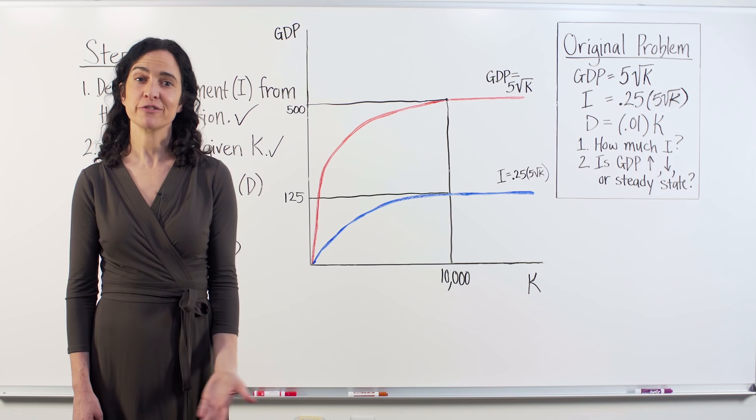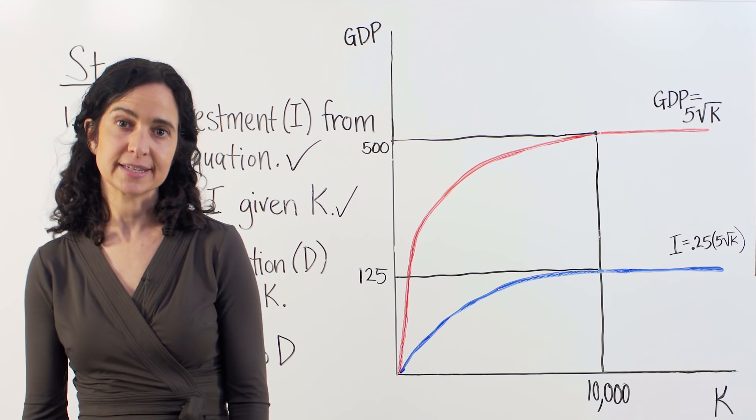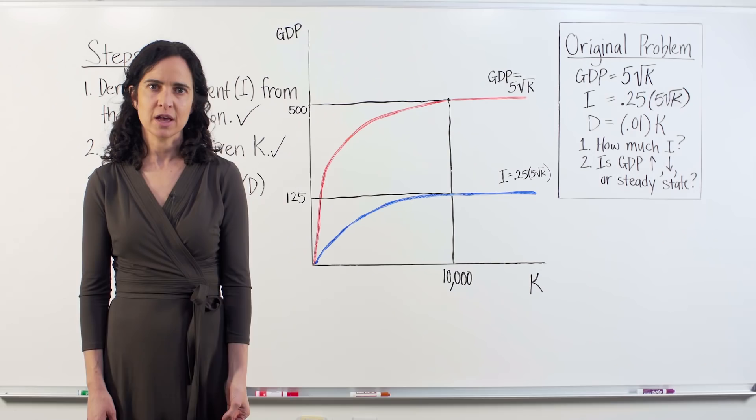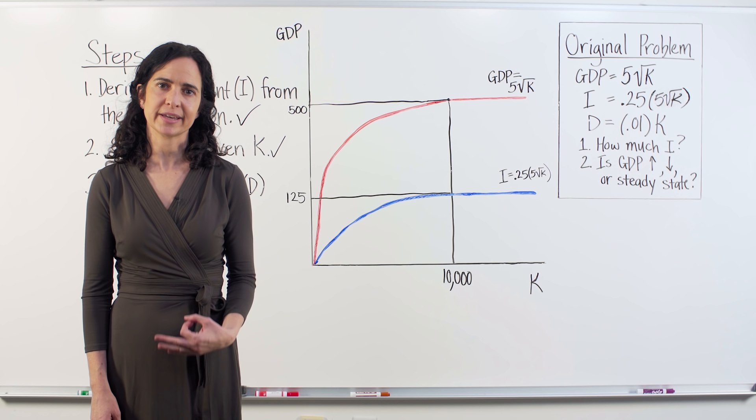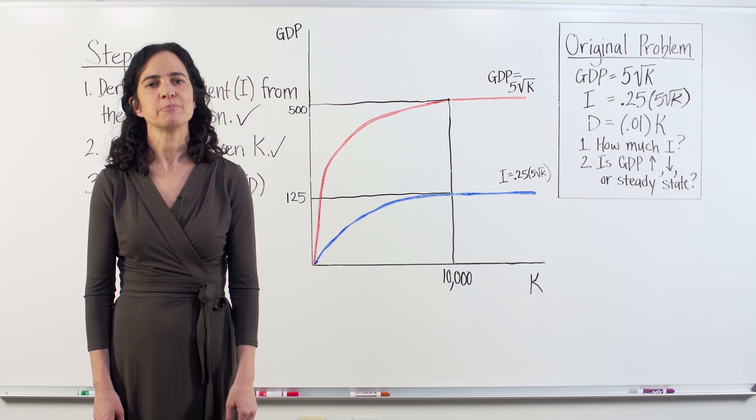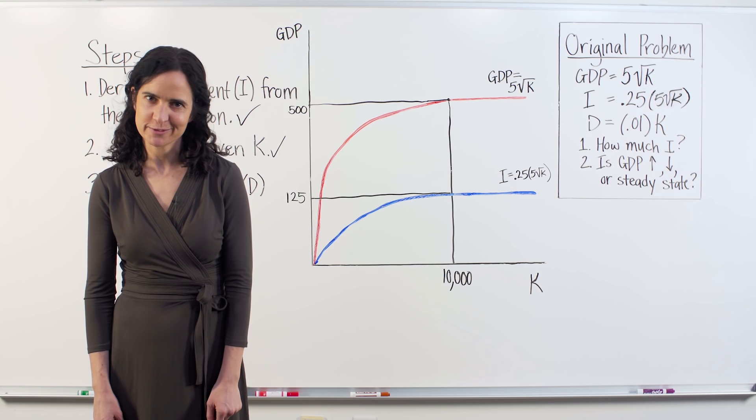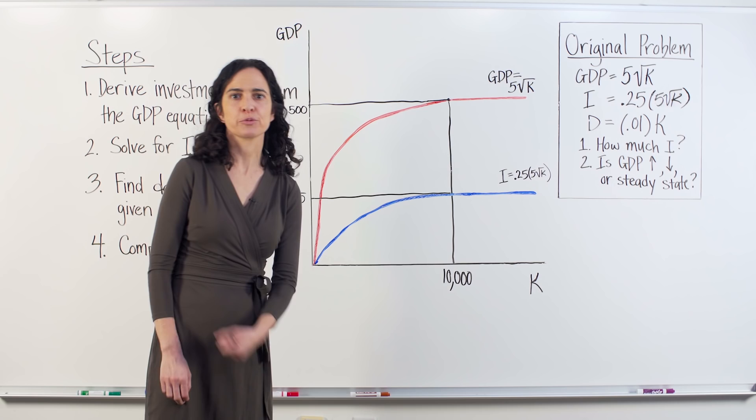So while this country is accumulating 125 worth of capital, we don't yet know if the country's capital stock overall is increasing, decreasing, or remaining constant, because we don't know how much of the capital stock is wearing down or depreciating. In the real world, machines break, laptops die. Think of physical capital in your own life. How many times have you dropped your iPhone and had to get a new one? Or how often have you replaced an old phone even though it still worked? So even though capital is being added to the stock of 10,000 through investment, some of this 10,000 is also being lost to depreciation, to those iPhones dropping.